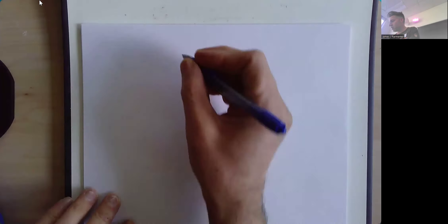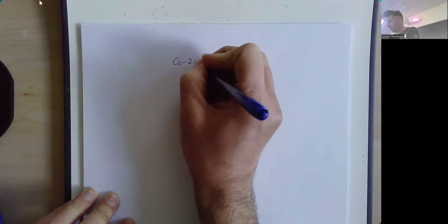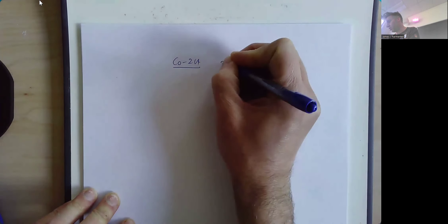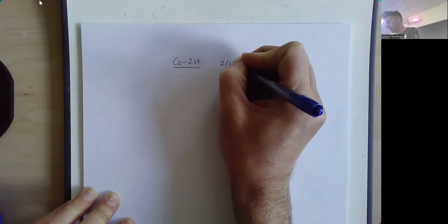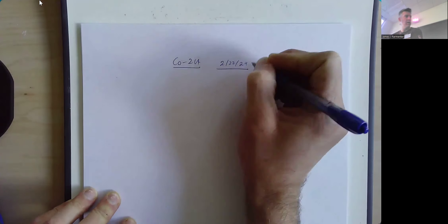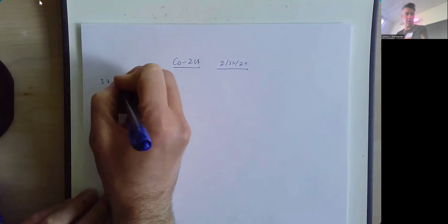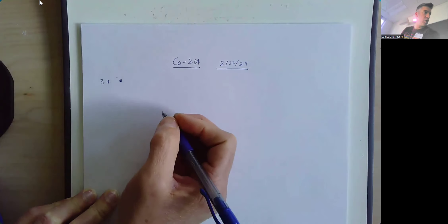This is question 52 from section 3.7 on implicit differentiation. Today is February 22nd, 2024. This is section 3.7, number 52.